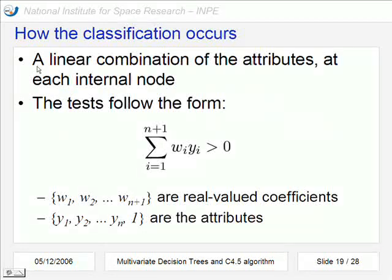The multivariate approach is a linear combination of the attributes at each internal node. The tests are in this way. We make a sum using weights and the attributes. Here the weights are real value coefficients, and the attributes are the attributes that we have. And we use also a simple attribute 1 here, just like the bias in the neural nets approach.